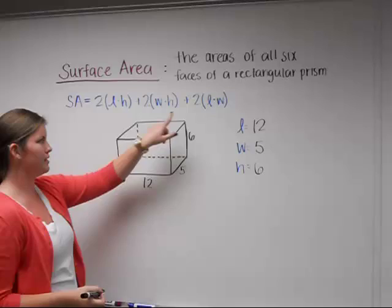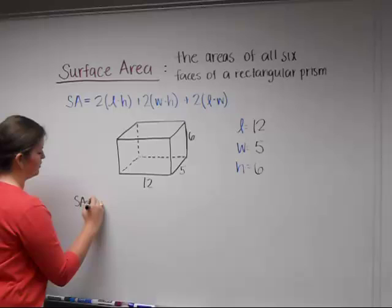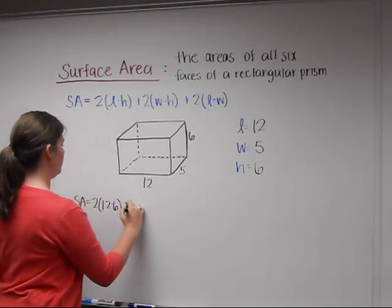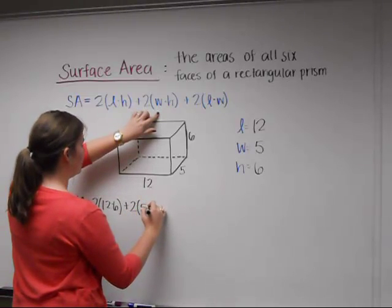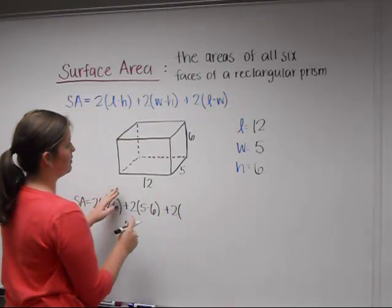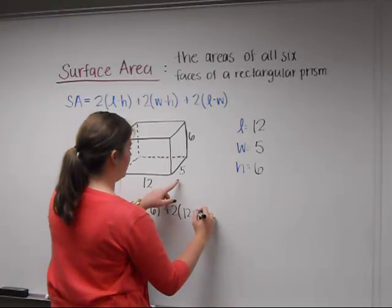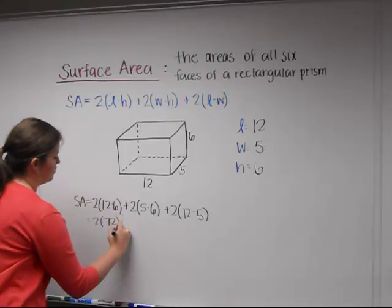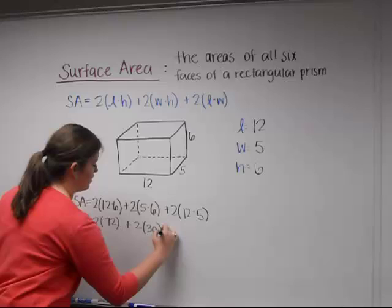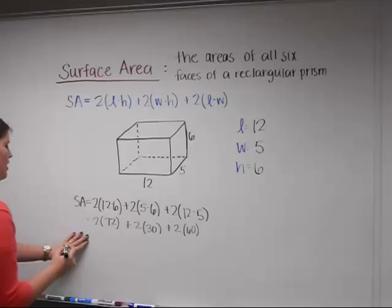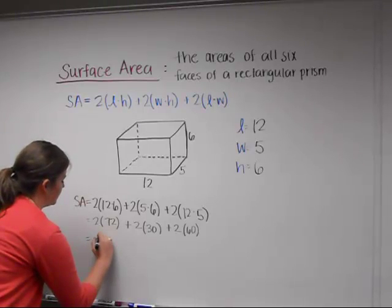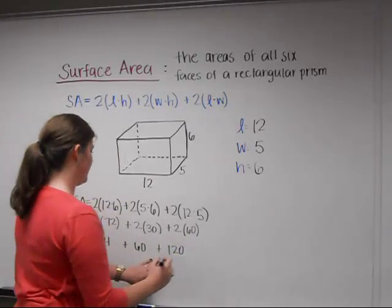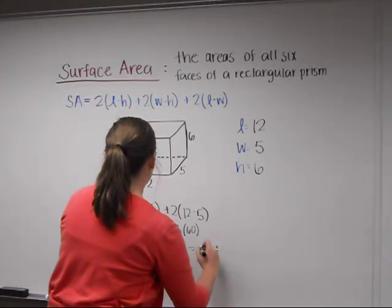Now that we've defined our variables, we can simply plug them into our equation. So the surface area is going to equal two times 12 times 6, plus two times 5 times 6, plus two times 12 times 5. First we do our parentheses: 2 times 72, plus 2 times 30, plus 2 times 60. Multiplying: 144 plus 60 plus 120. And if we add these together, we get 324.